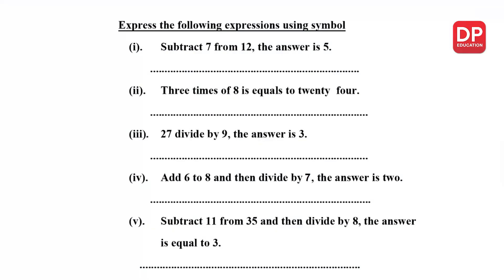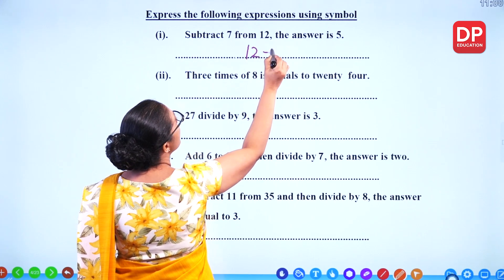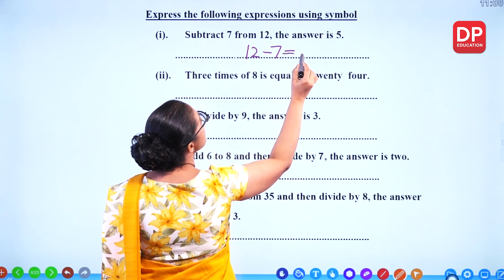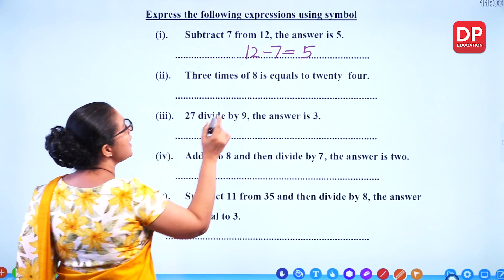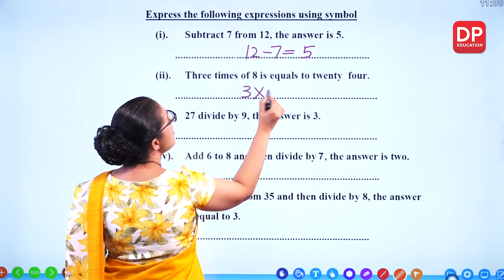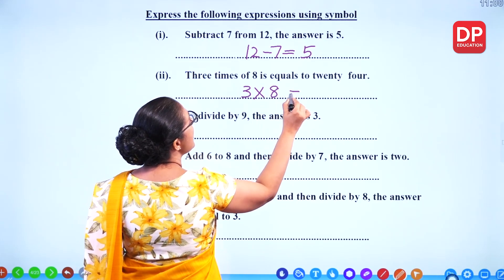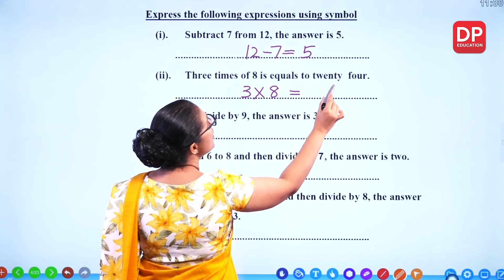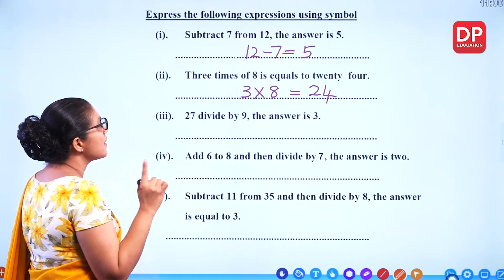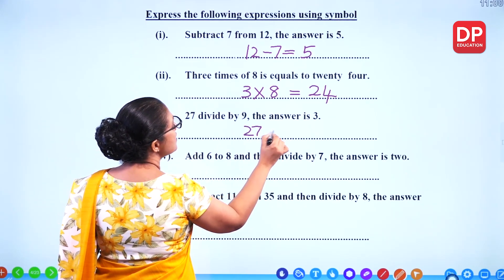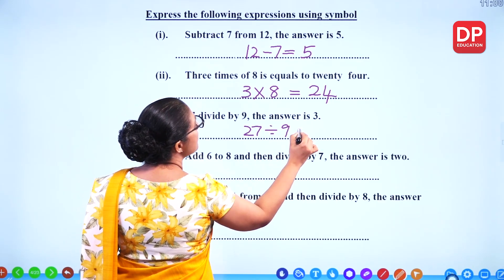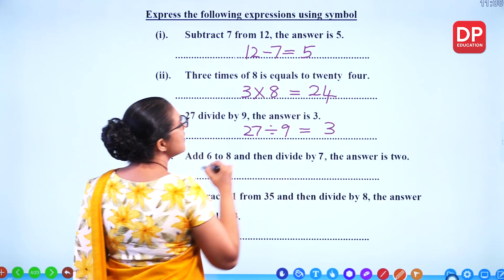Express the following expressions using symbols. Subtract 7 from 12: that's 12 minus 7, answer is 5. 3 times of 8, multiply by 8, this is equal to 24. 27 divided by 9, the answer is 3.